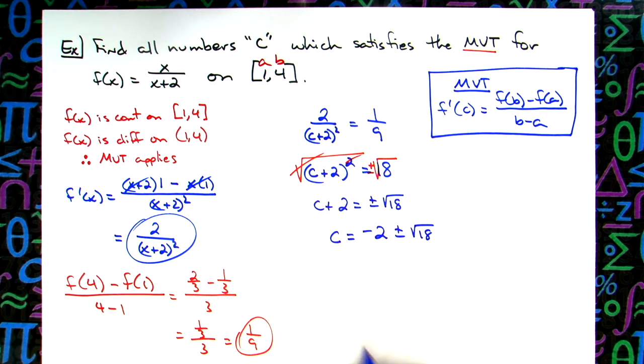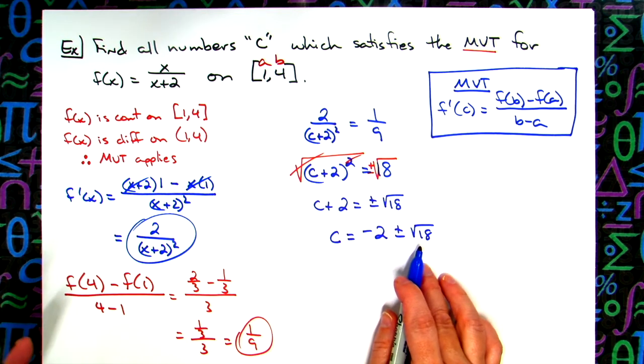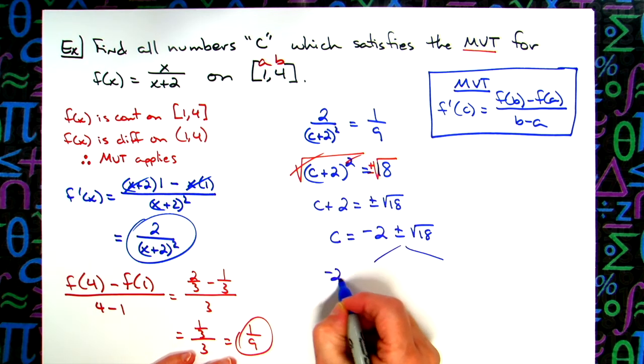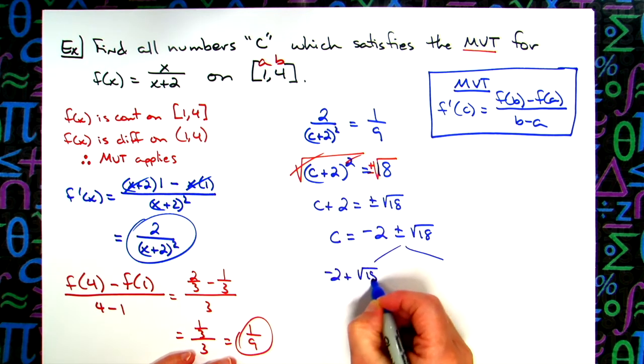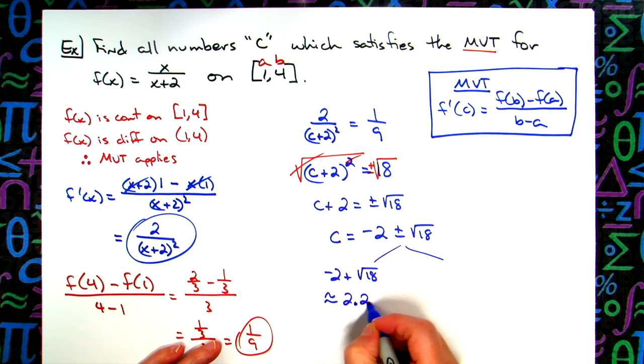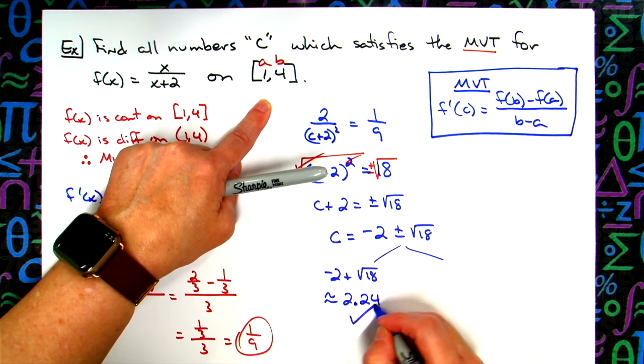So we've got two values there that we're going to have to check. Might be easier to grab a calculator, get some decimal approximations here for these two different values. The -2 plus the square root of 18, I will leave that to you to plug into your calculator. But if you trust my calculations, it's roughly 2.24. And yes, this falls in the interval, so definitely this is going to be one of our choices.